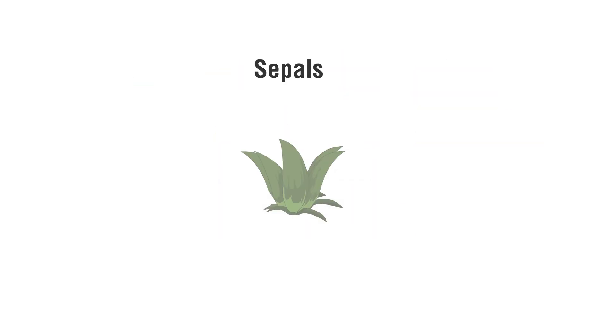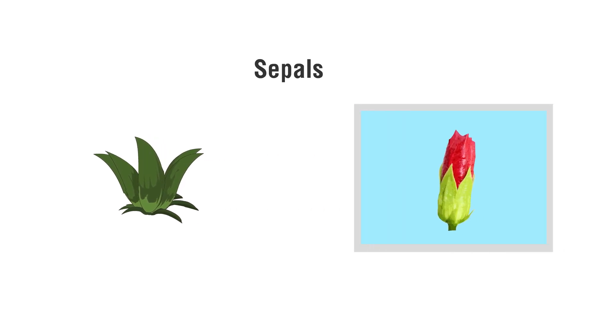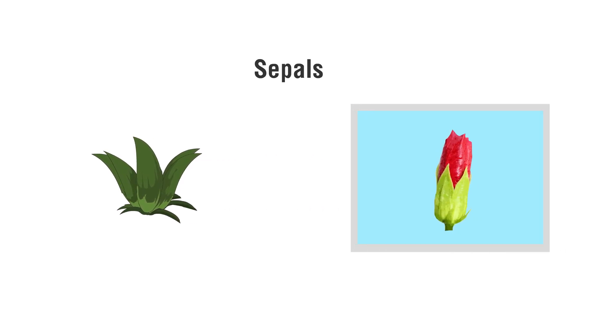Observation: We will observe different parts of the flower, which includes both the male part and female part. Let's go through a detailed study. Sepals: The pointed ends are called sepals, which are found at the bottom of the flower. The green sepals protect the bud of the flower.